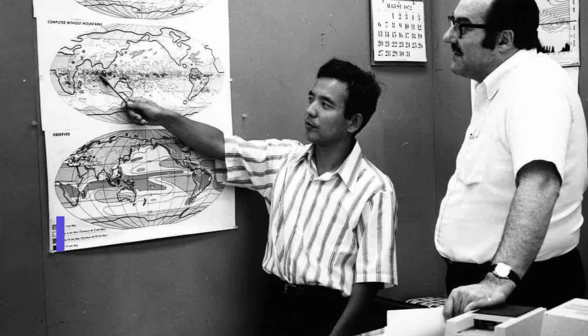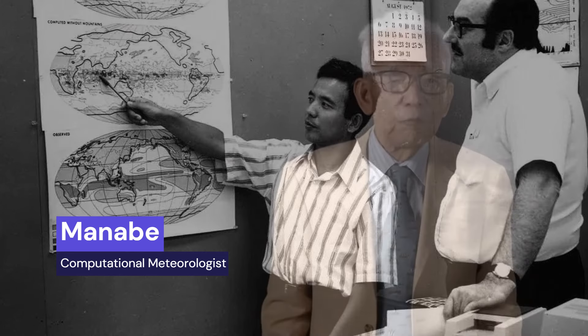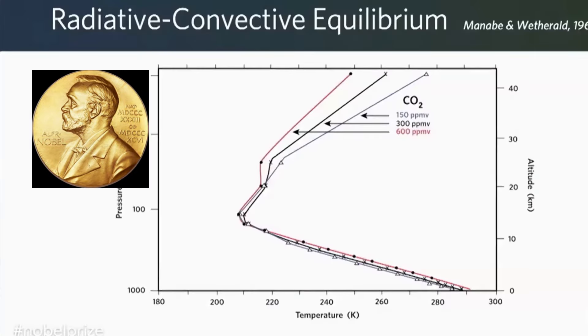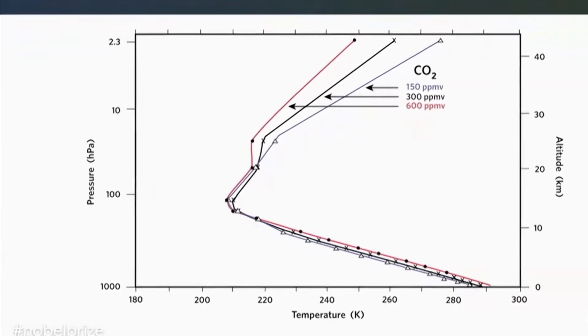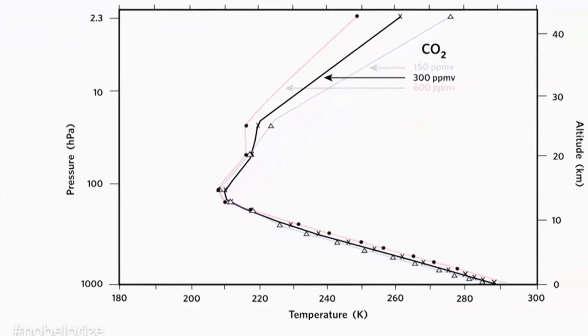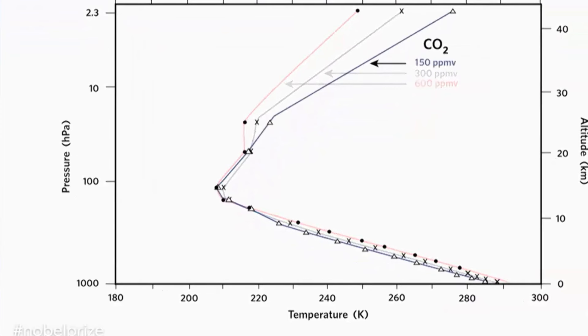This is Dr. Manabe, the American-Japanese meteorologist. Here, he is presenting his Nobel Physics Lecture in 2021, in which he used a newly animated diagram to explain his key contribution together with Wetherald. There are three curves they calculated for the vertical temperature distributions from the surface of the Earth to about a 45-kilometer altitude in the middle of the stratosphere.